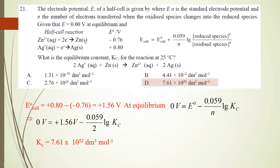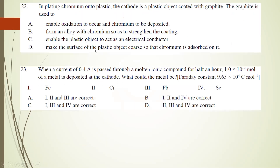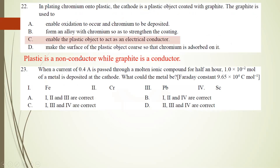So that is for number 21 — very straightforward. Number 22: in plating chromium onto plastic, the cathode is a plastic object coated with graphite. What is the purpose of the graphite? Plastic is a non-conductor while graphite is a conductor, so it enables the plastic object to act as an electrical conductor. That is why you add graphite.